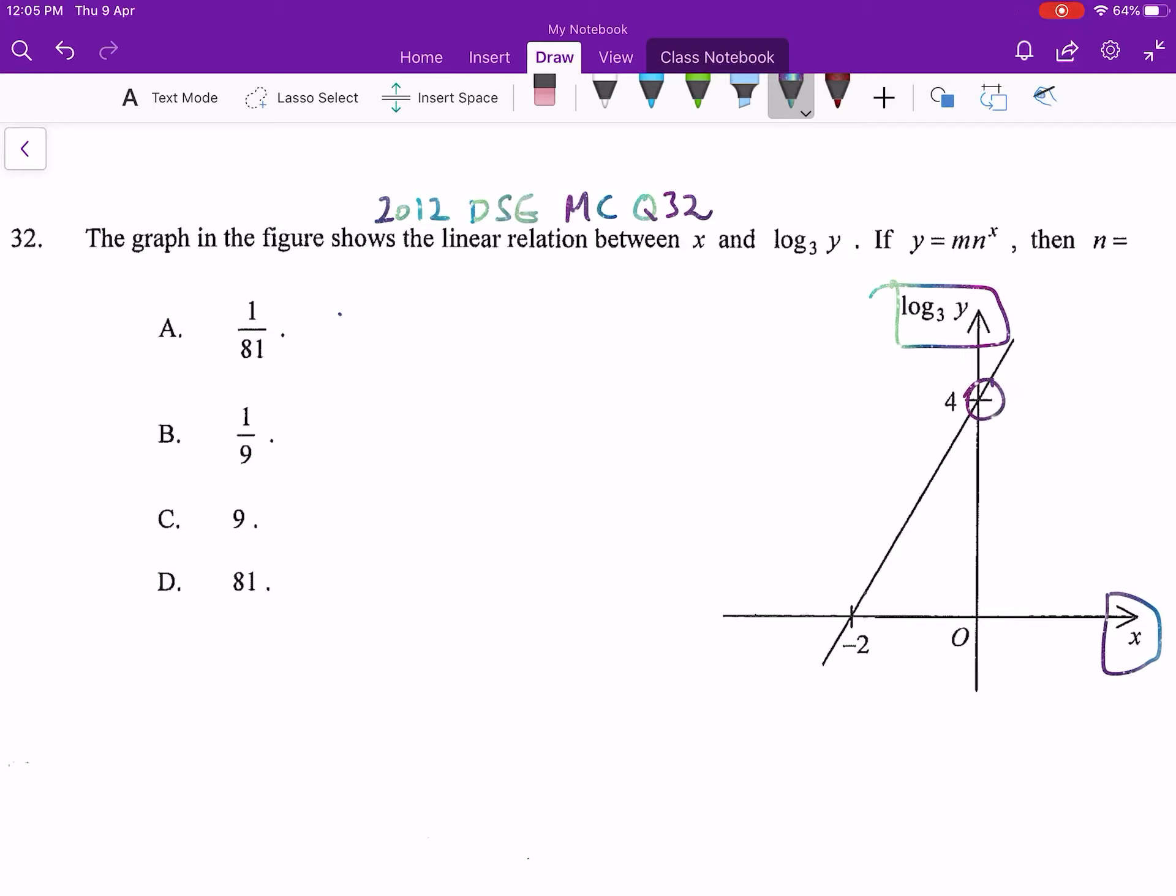If I write down these two points, the first one is x=0, log₃y=4. This is (0, 4). My main point is if I transfer this coordinate system into only x and y, what does it become?